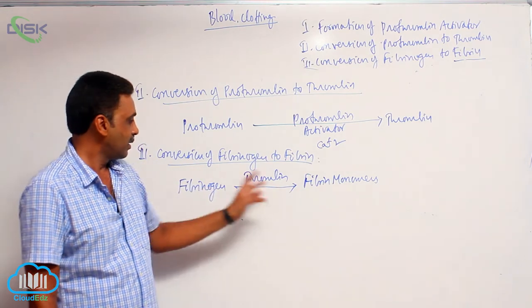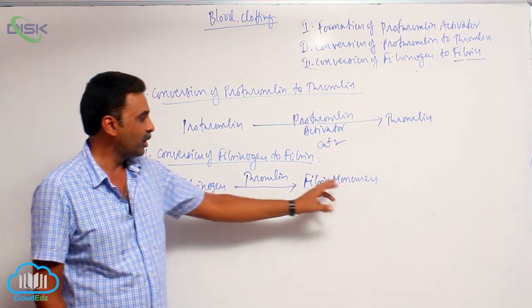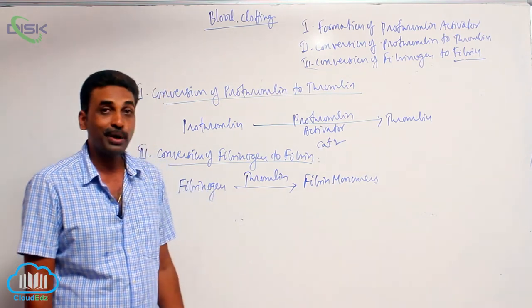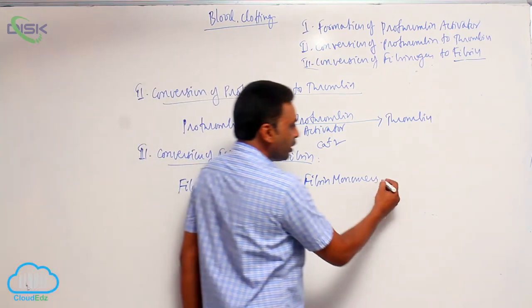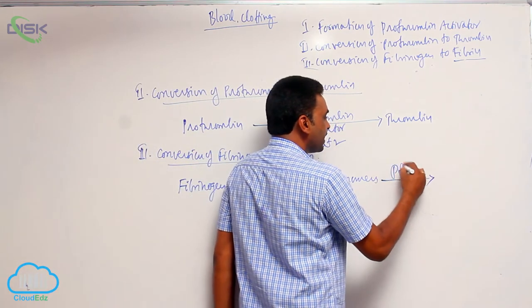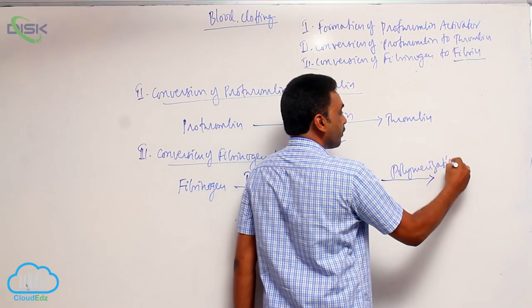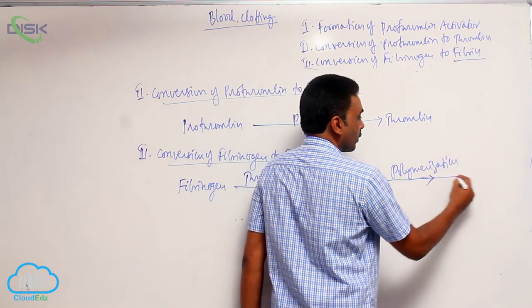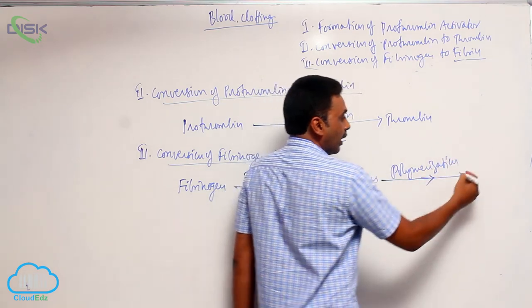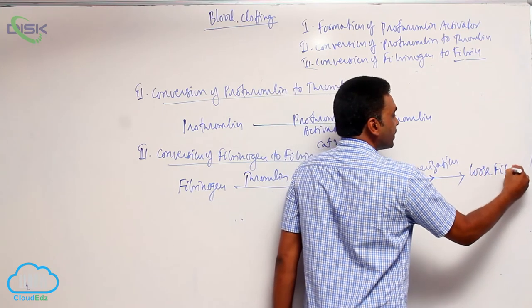Fibrinogen is a hexamer; four polypeptides are removed and it becomes fibrin monomers. The fibrin monomers then undergo polymerization and form loose fibrin threads.